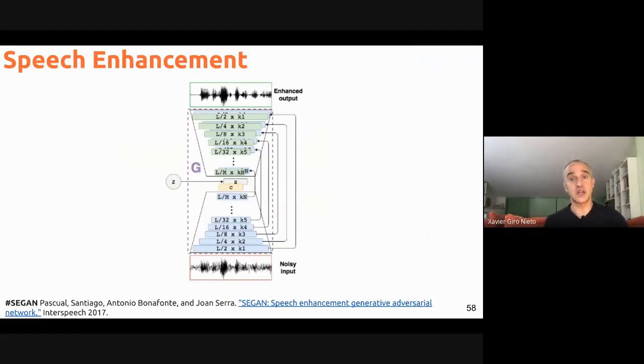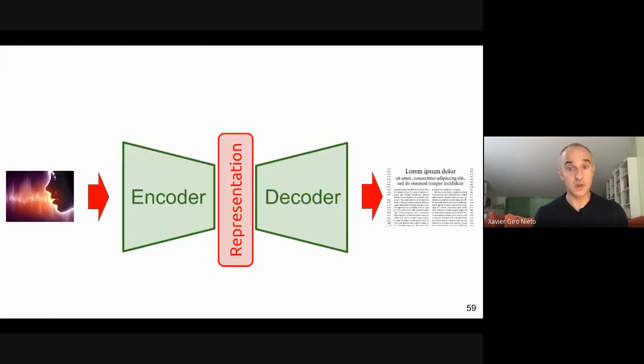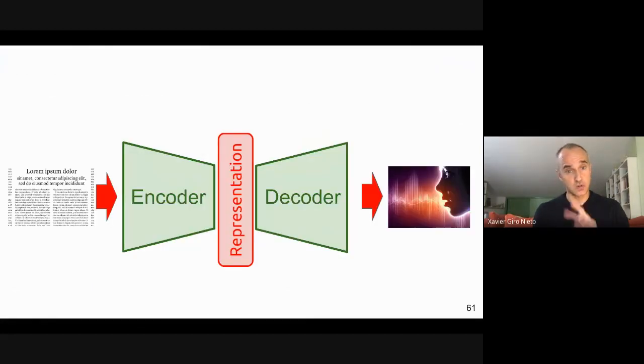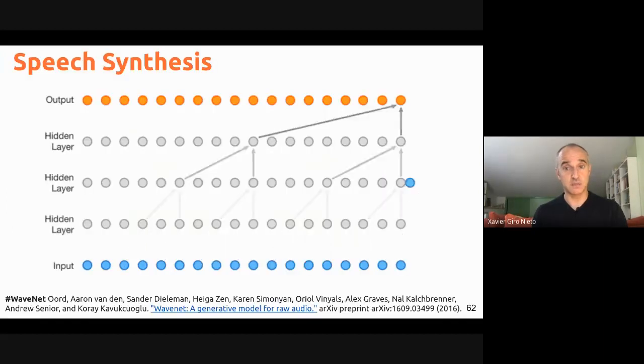Applications that go from speech to speech, for example, speech enhancement. And again, this work was developed at UPC at our university, which was the first work using generative adversarial networks for denoising speech. Then we can start doing combinations, which is very exciting. For example, we go from speech to text, then we'll have automatic speech recognition, or we do the opposite way, we have text and the output is speech. Then we'll have speech synthesis.